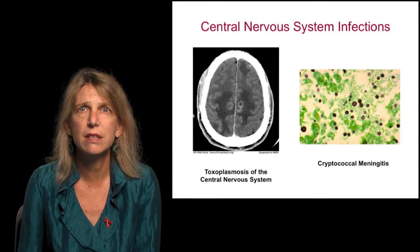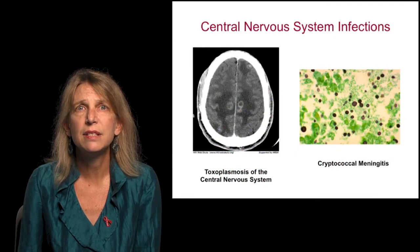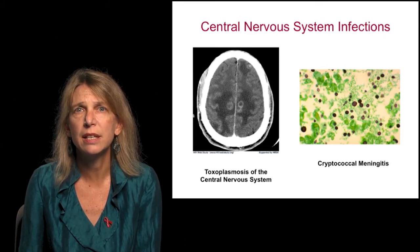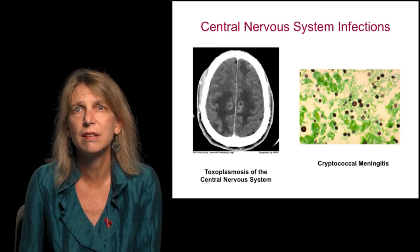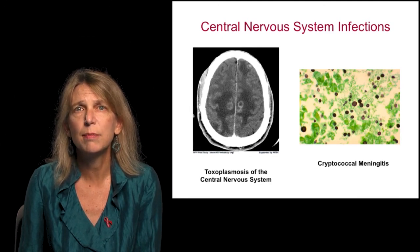Central nervous system infections are also common AIDS-causing conditions. Toxoplasmosis is a parasite of the central nervous system which can present as seizures and headache, and shows ring-enhancing lesions on CT or MRI. Cryptococcal meningitis is caused by a fungus and is one of the most common opportunistic infections in advanced AIDS patients in Africa. It is caused by the encapsulated fungus Cryptococcus neoformans.